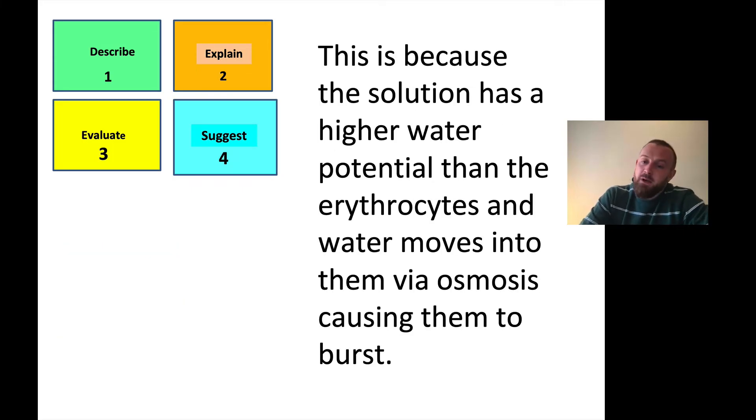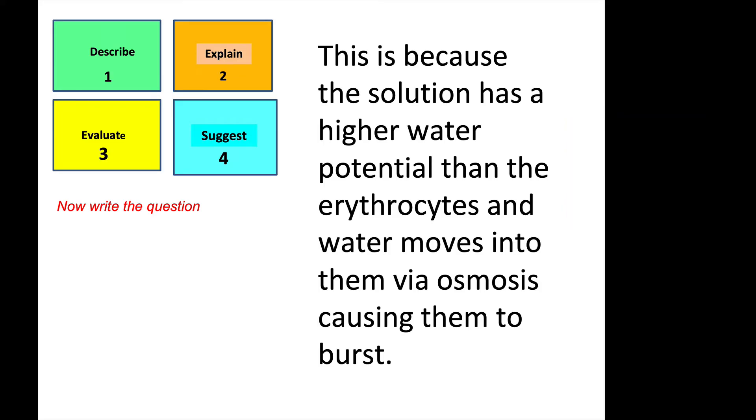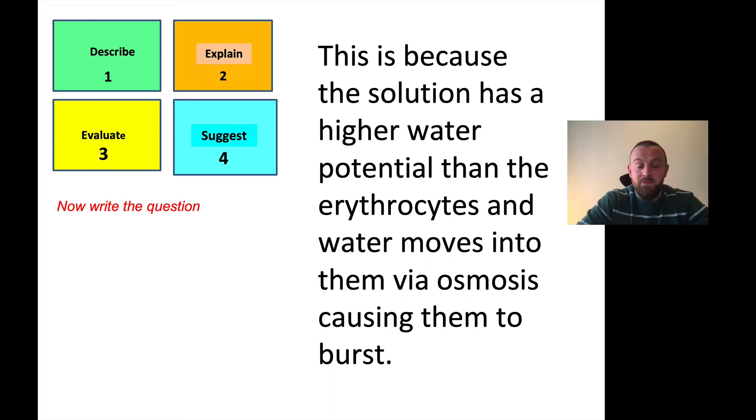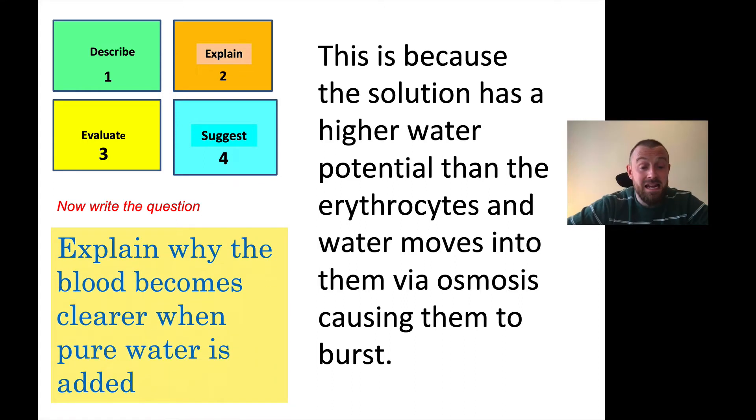Next one. This is because the solution has a higher water potential than the erythrocytes and water moves into them by osmosis, causing them to burst. Well, that's an explain. Now, thinking about the question is quite tough on this one. Give you a second. Pause the video if you want. It is a tough one. So this one is explain why the blood becomes clearer when pure water is added. This is a kind of experiment thing. Sometimes if you add pure water to blood, the pure water causes the blood cells to pop and it becomes a bit clearer as opposed to cloudy because all the cells are bursting - to do with osmosis and AS content. Next one.